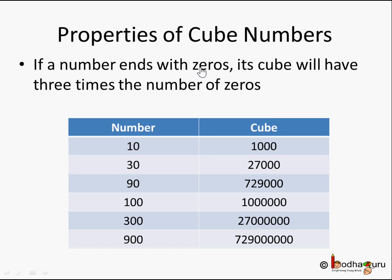Another property: if any number ends with zeros, its cube will have 3 times the number of trailing zeros. For example, 10 has 1 zero and its cube is 1000 (3 zeros). 100 has 2 zeros and 100³ = 1,000,000 — that is 2 × 3 = 6 zeros.